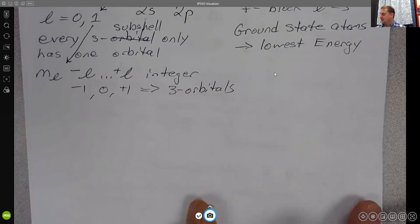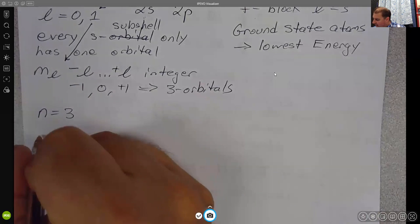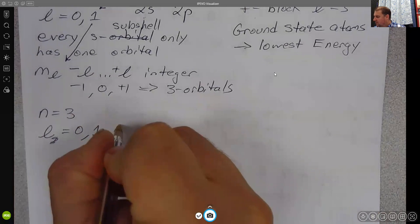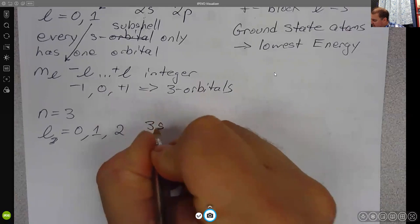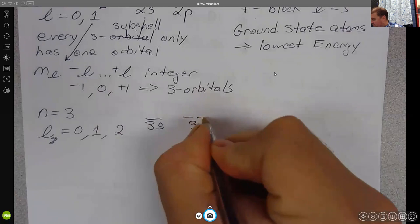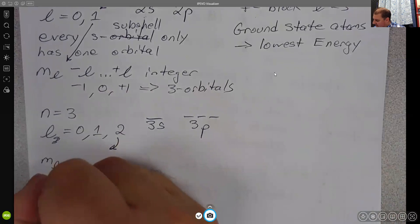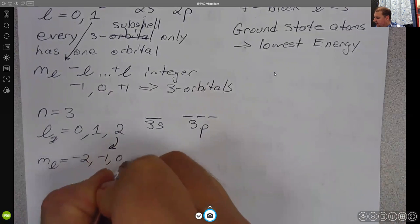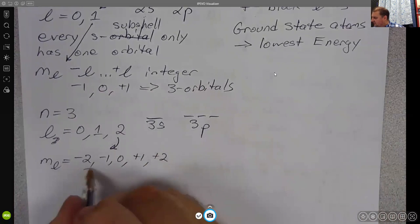If we go ahead and go up to N equals 3, now L can be 0, 1, or 2. And so we have the 3s with one orbital. We have the 3p with three orbitals as we said. And when L is 2, M sub L can be negative 2, negative 1, 0, positive 1, or positive 2, which gives us five orbitals.